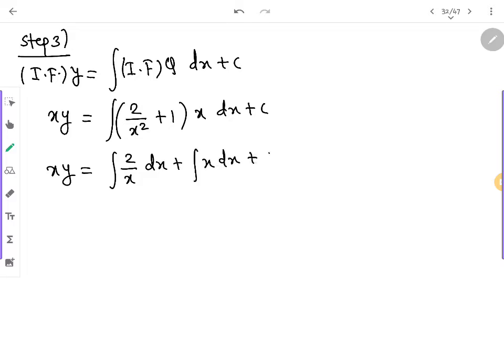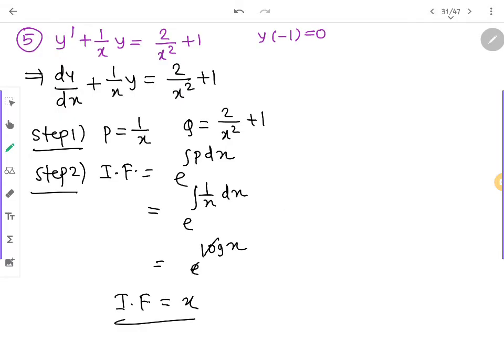Now just solve this. xy equals 2 log x plus x square by 2 plus c. Question number 5 is an initial value problem. Initial values are y of minus 1 equal to 0.